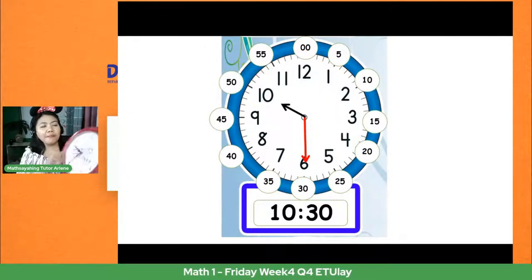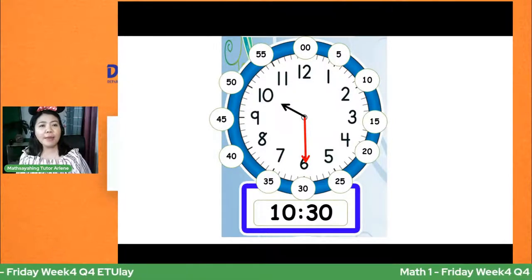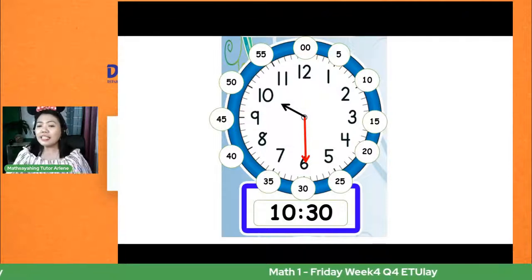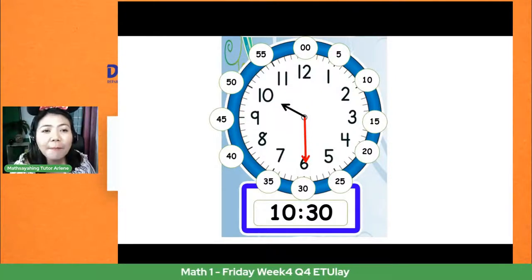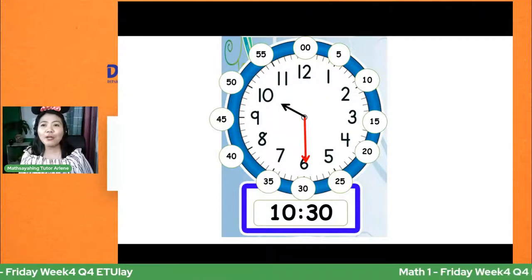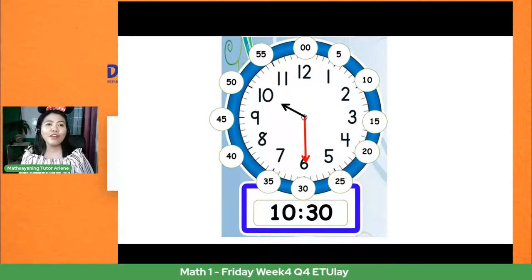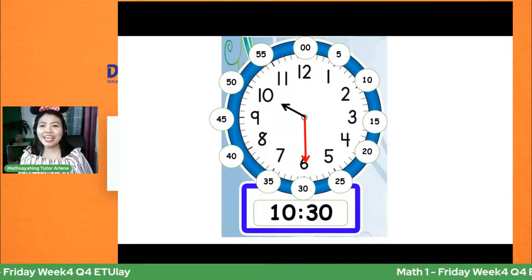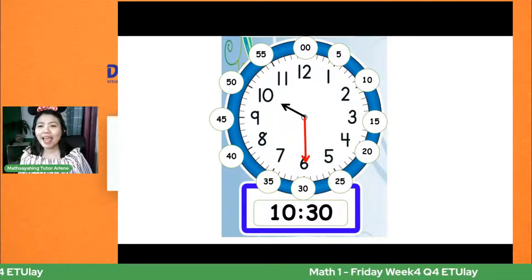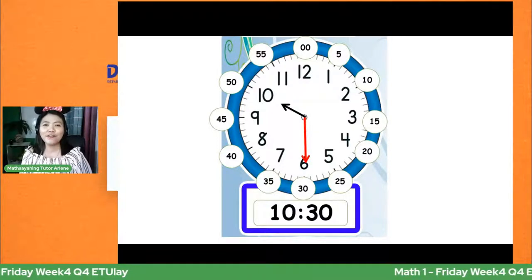Anong oras ang pinakikita? Meron tayong mahabang kamay nasa number 6, ang maikling kamay ay nasa number 10. Una natin sasabihin ang nasa maikling kamay — ito ay 10. At ang nasa mahabang kamay, bilang lang tayo ng minuto: 5, 10, 15, 20, 25, 30. Ibig sabihin, yan ay 10:30. Kagaya ng sagot ni Liam Matthew, ni Jeneline, ni John Frederick — tama mga anak.